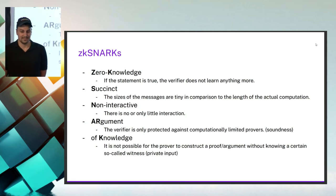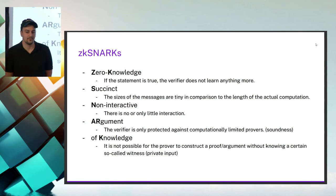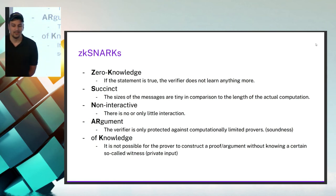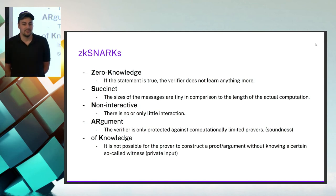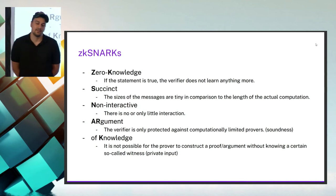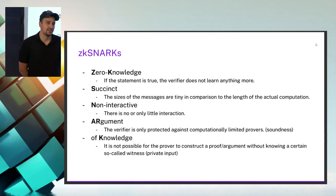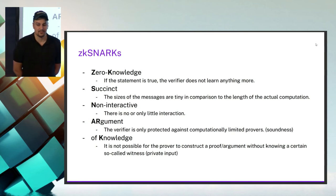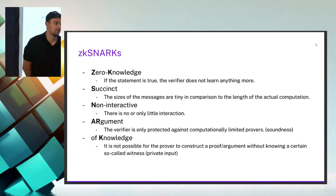Without much more detail: zero-knowledge — if the statement is true, the verifier does not learn anything more than the validity of the statement. Succinct — the size of the messages are tiny in comparison to the length of the computation needed. Non-interactive — the proof needs to be proven with little to no interaction. Argument — the verifier is only protected against computationally limited provers. And of knowledge — we need some private input, called the witness, that we want to be able to prove.